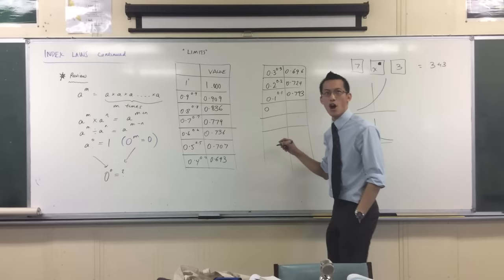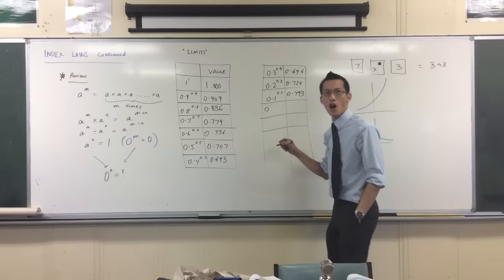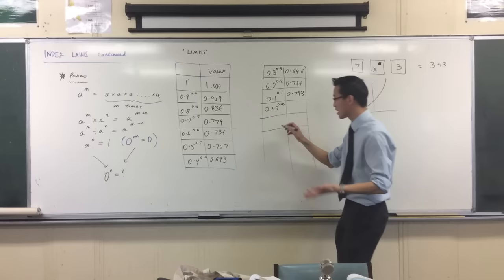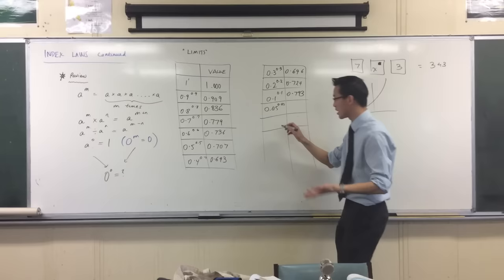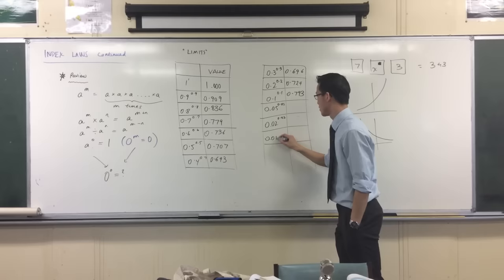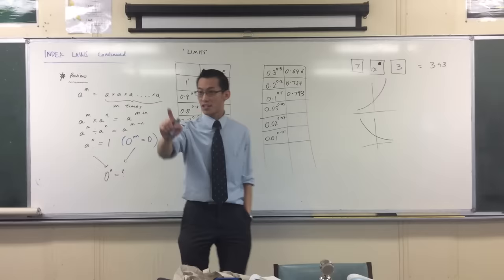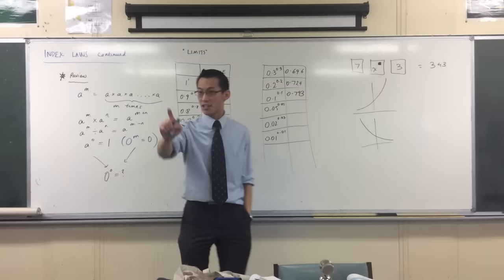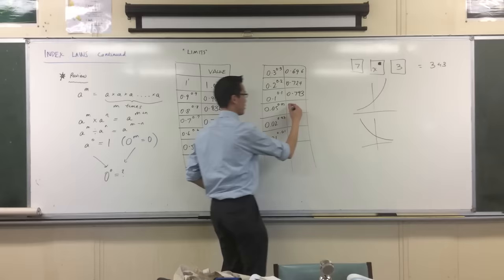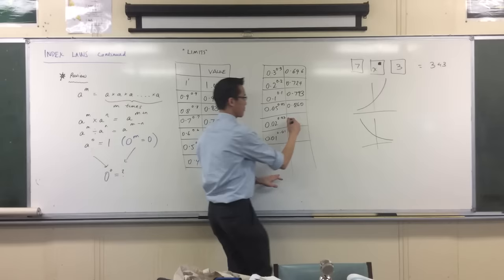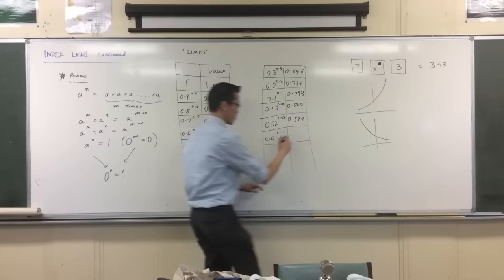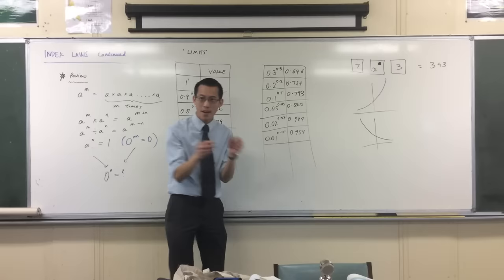So we need your calculators again. Here are the numbers I'm going to suggest. Let's get half of this. What's half of 0.1? I think it's 0.05, isn't it? So, Jared, you got gypped out by doing 1 to the power of 1. So why don't you do 0.05 to the power of 0.05? Kyle, do you want to do, let's go smaller again. Let's go 0.02 to the power of 0.02. Jack, do you want to do 0.01? Jared, can you tell me what yours is? 0.860. Still increasing. Yep. 0.924.